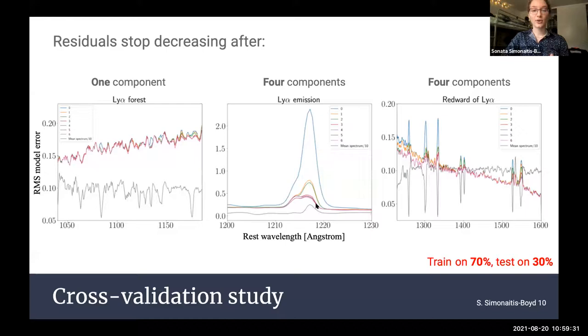In the Lyman-alpha emission region, similarly, the residuals stop decreasing at four components as well. However, in the Lyman-alpha forest, the mean spectrum is almost adequate. There are just a few places where we need to add some components. But we find out that actually just one component is adequate to model the Lyman-alpha forest.